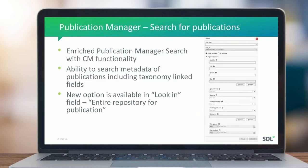Another frequently requested feature was the ability to search for different publications within Publication Manager. This was previously only available in the web clients, and now we've brought it into Publication Manager. You can search for publications by title but also by any metadata, including taxonomy-linked fields you've applied — so if you have an integrated taxonomy, you can search by the tags applied to publications.